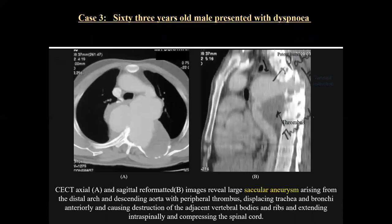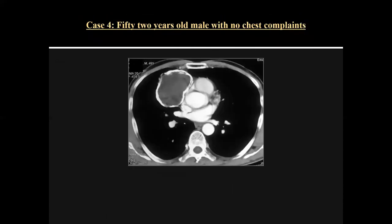Case three was a 63-year-old male with dyspnea. On contrast CT in axial and sagittal scan, there was a large saccular aneurysm arising from the distal arch and descending thoracic aorta with peripheral thrombus, displacing the trachea and bronchi anteriorly, causing erosion of adjacent vertebral bodies and ribs, and extending intraspinally with compression of the spinal cord. This was a case of large saccular aneurysm of the descending thoracic aorta.